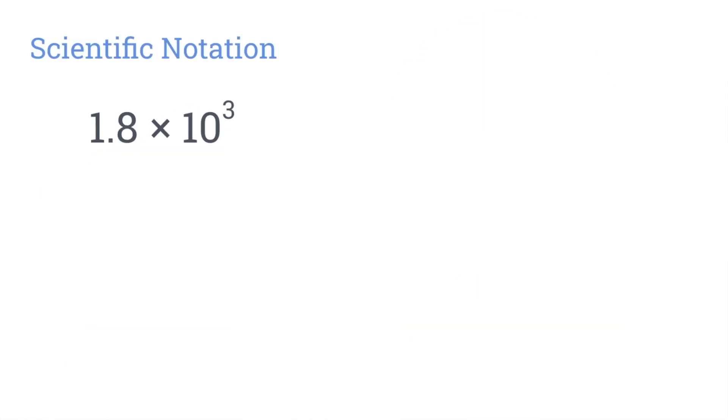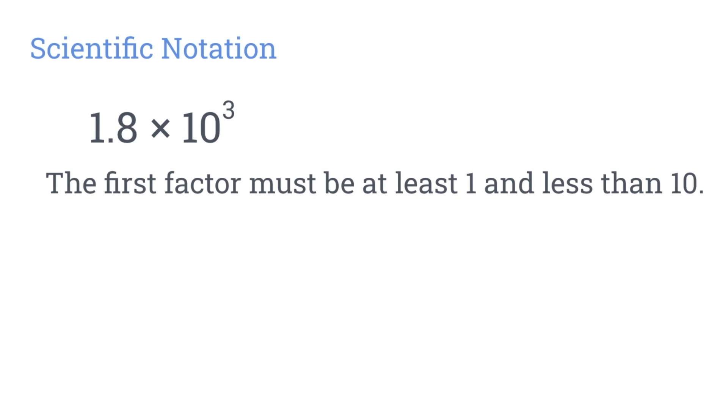Here's an example. 1.8 times 10 to the power of 3 is in scientific notation. Numbers written in scientific notation consist of two factors. The first factor must be at least 1 and less than 10, like 1.8. The second factor must be a power of 10, like 10 to the power of 3. So 1.8 times 10 to the power of 3 is an example of a number written in scientific notation.